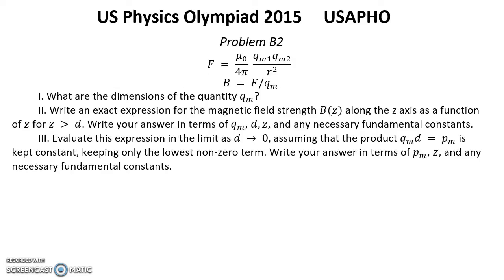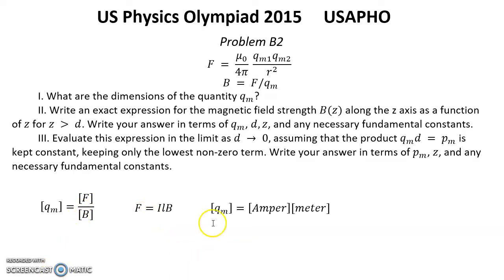Solution for Question 1: What are the dimensions of QM? From the second equation, the dimension of QM equals the dimension of force divided by the dimension of magnetic field. Since force equals current multiplied by length multiplied by magnetic field, the magnetic field cancels, and we get: dimension of QM = ampere·meter. That is the answer for Question 1.